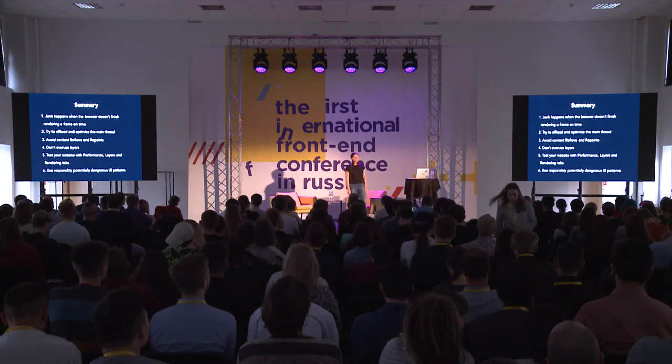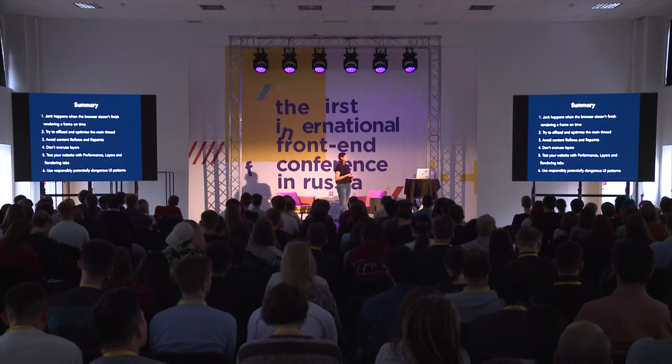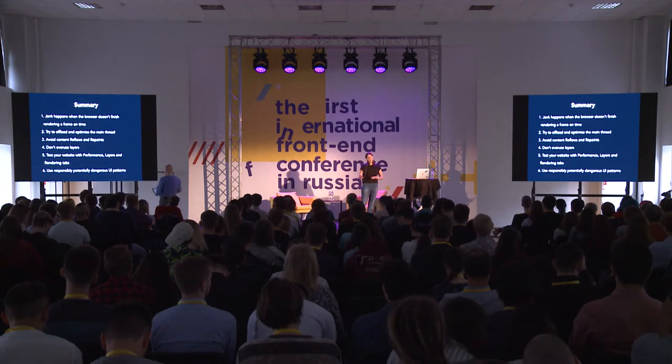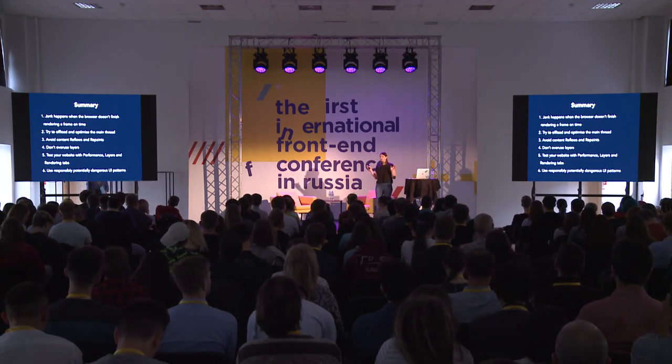To sum up: jank happens if the browser doesn't match the refresh rate of our screens — if frames are not served within the deadline. We should try to offload and optimize the main thread, and try not to have reflows or repaints if they're not really needed. At the same time, we shouldn't overuse layers. Always test your website with developer tools — performance tab, layers tab, rendering tab, performance monitor. Try to make sure you're not making performance worse with micro-optimizations, and use potentially dangerous UI patterns responsibly. Please don't use parallax if you can avoid it. There's a list of resources — really eye-opening once you start digging in.